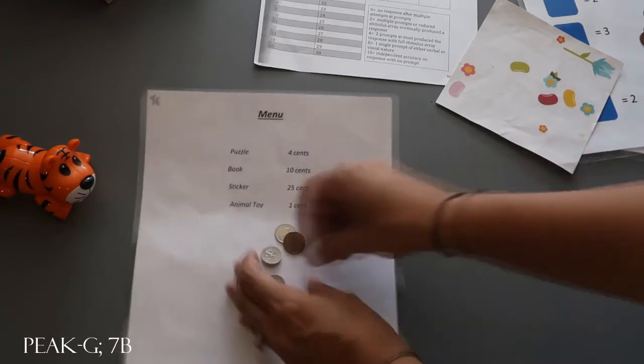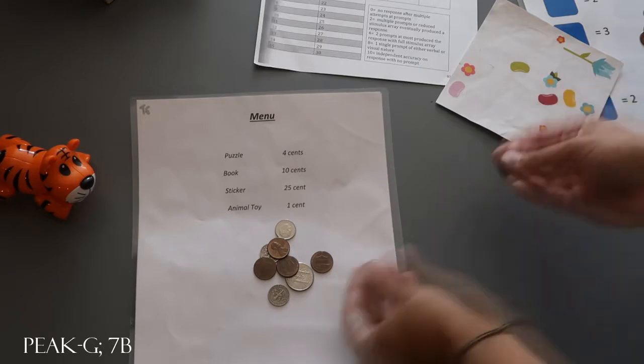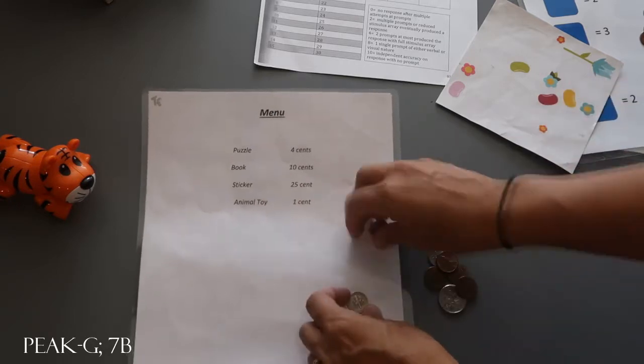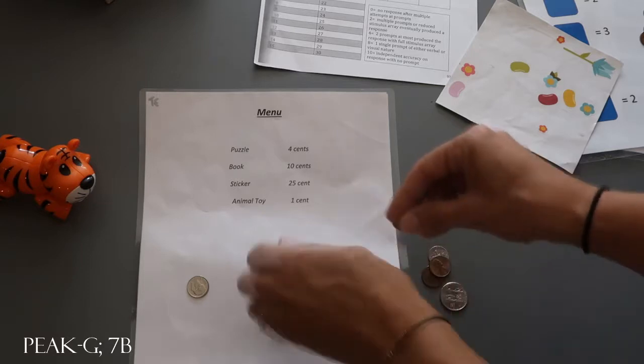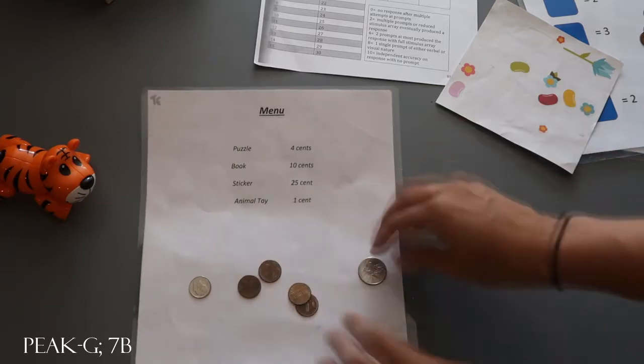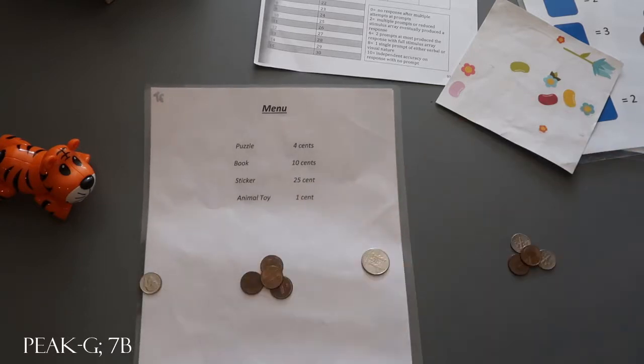It kind of depends on the learner. If they can handle it, you can just have all the money in a pile for them. Another way we've done it before is where we would put out 10 cents, 4 cents in a pile, and 25 cents in a third pile to give them kind of a field of three.